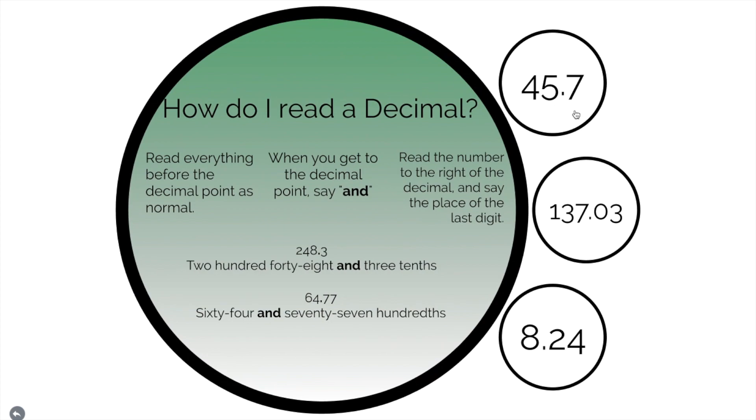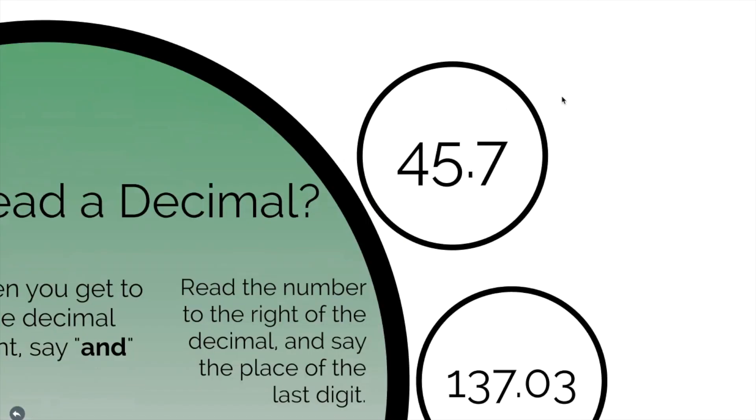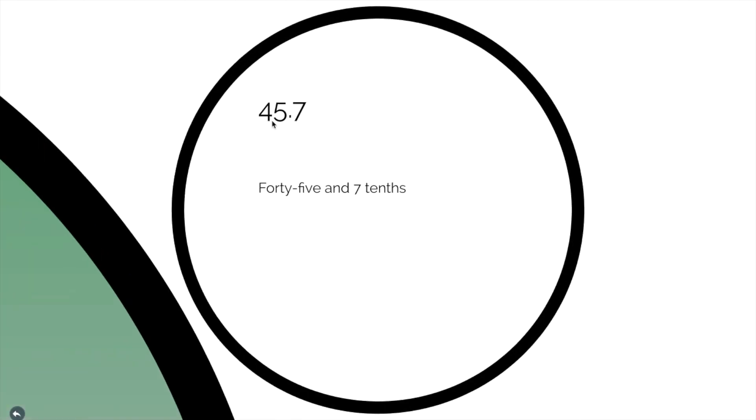Now what about this guy? How would you read this number? Hopefully you said 45 and seven tenths. 45 and seven tenths. This seven is in the tenths place.